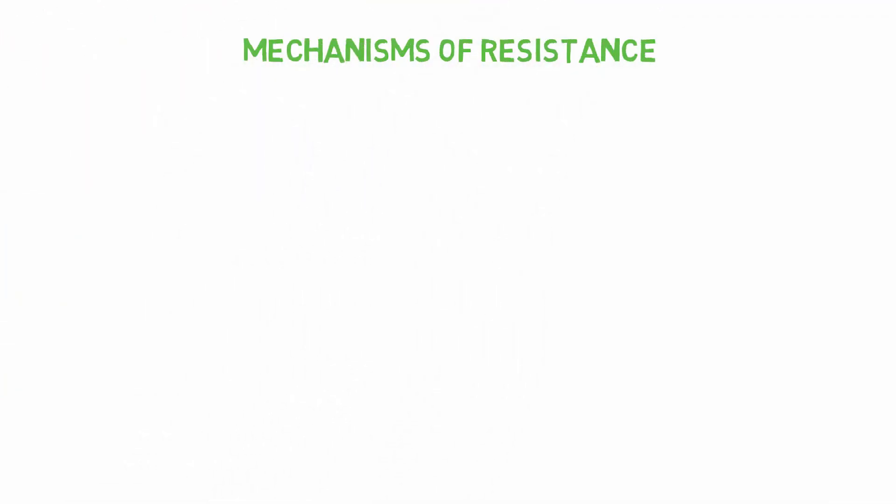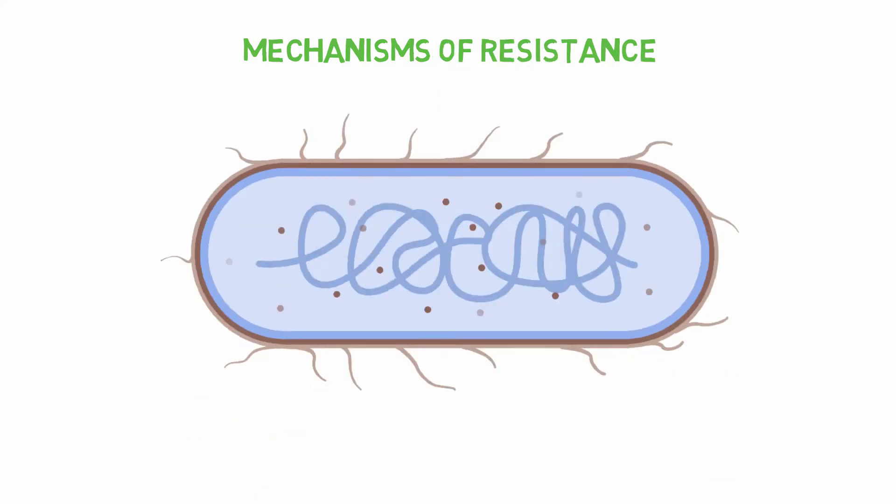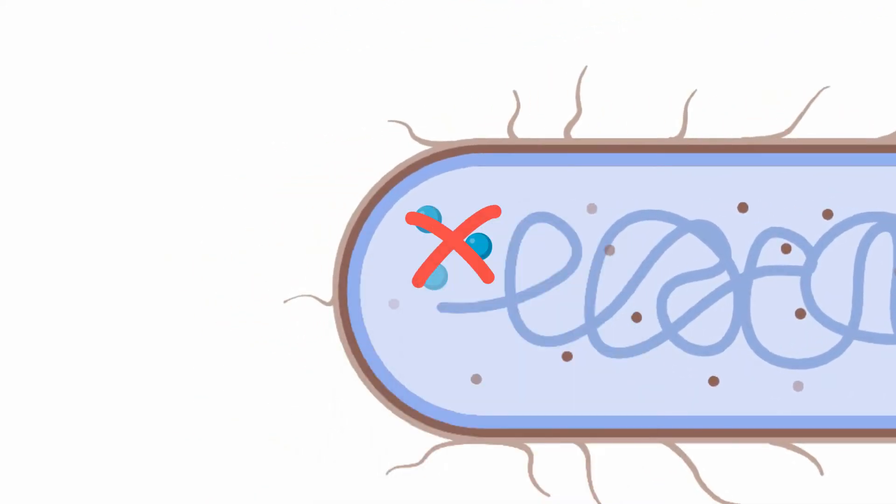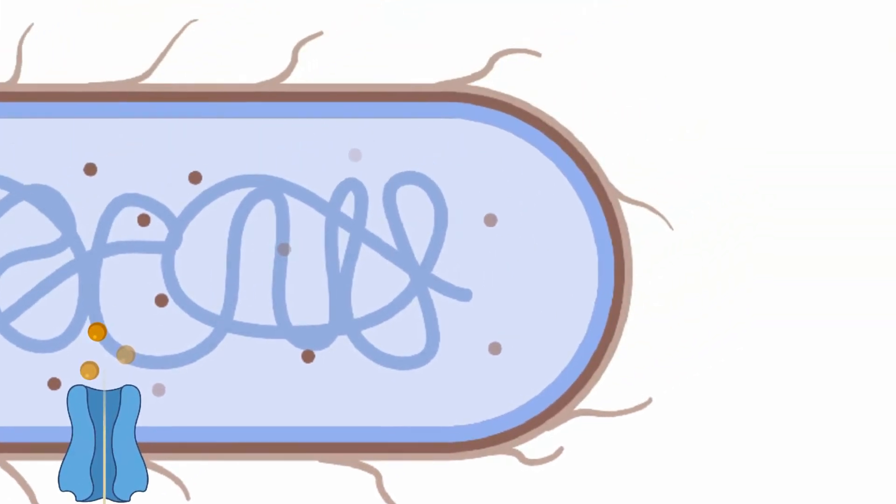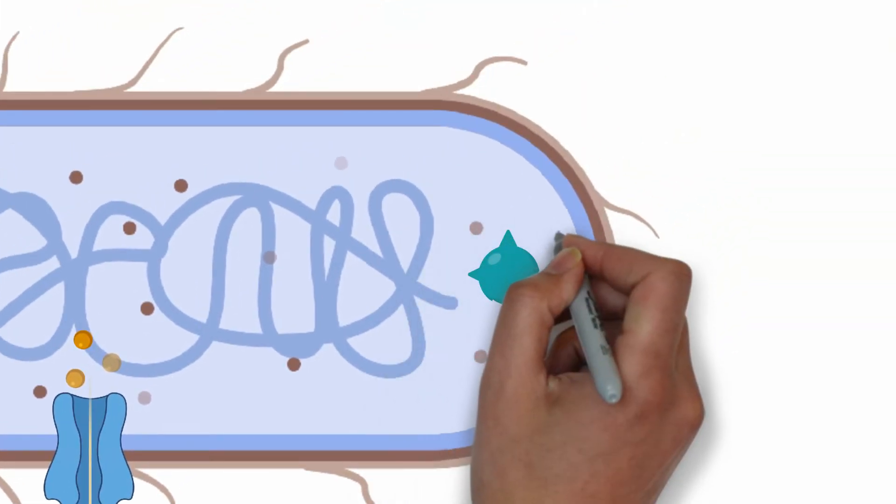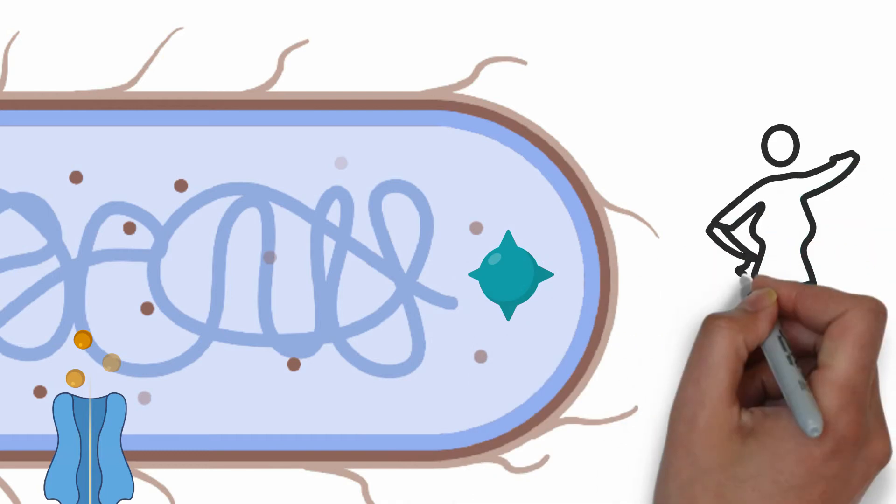Acquired mechanisms of resistance may include the capacity to inactivate antibiotic molecules, the creation of pumps to throw antibiotics out of the cells, or the mutation of cellular components so that antibiotics can no longer find their target.